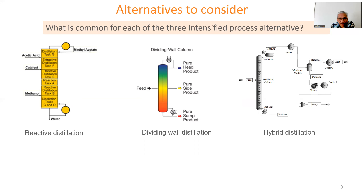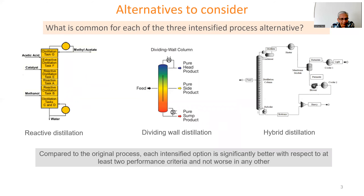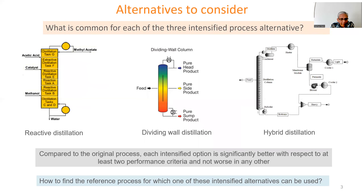What is common in each of the three intensified process alternatives? Compared to the original process, each intensified option is significantly better with respect to at least two performance criteria, and not worse in any other. The issue is how to find the reference process for which one of these three intensified alternatives can be used — which is the process where they can be applied.